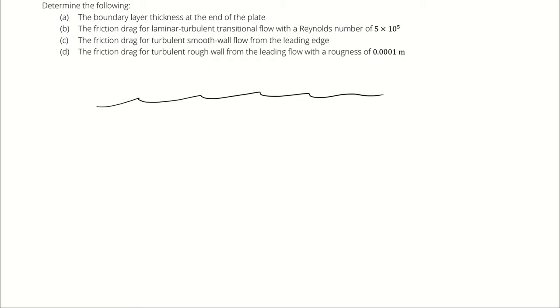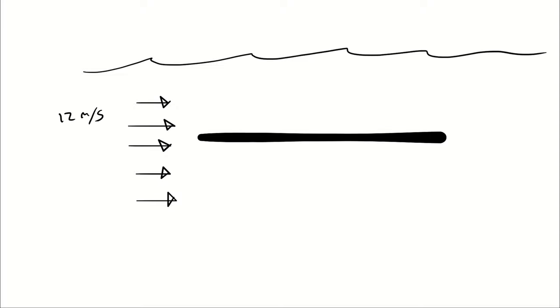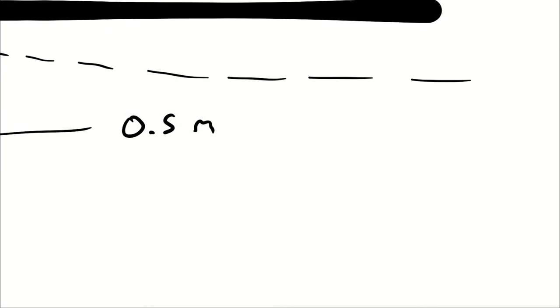So our hydrofoil, which is like an airfoil except for water, is being modeled as a flat plate, immersed in seawater, where the velocity is 12 meters per second. The temperature is 20 degrees Celsius. I want us to figure out what the boundary layer thickness is at the end of the plate. It is half a meter long and two meters wide.